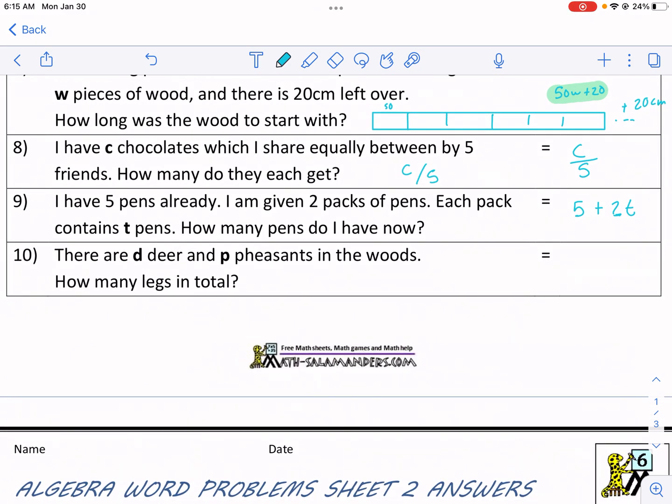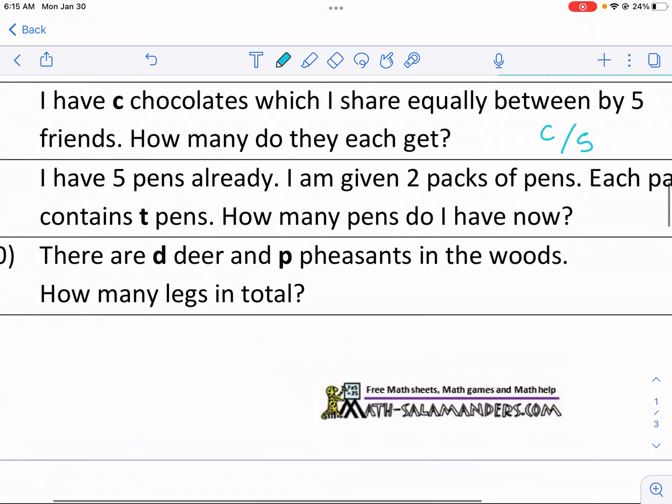There are D deer and P pheasants in the woods. How many legs in total? This one's a good one. Because it's a little tricky. We need to know the number of legs. We need to know some biology here. So we have D deer. I know deer have four legs each.